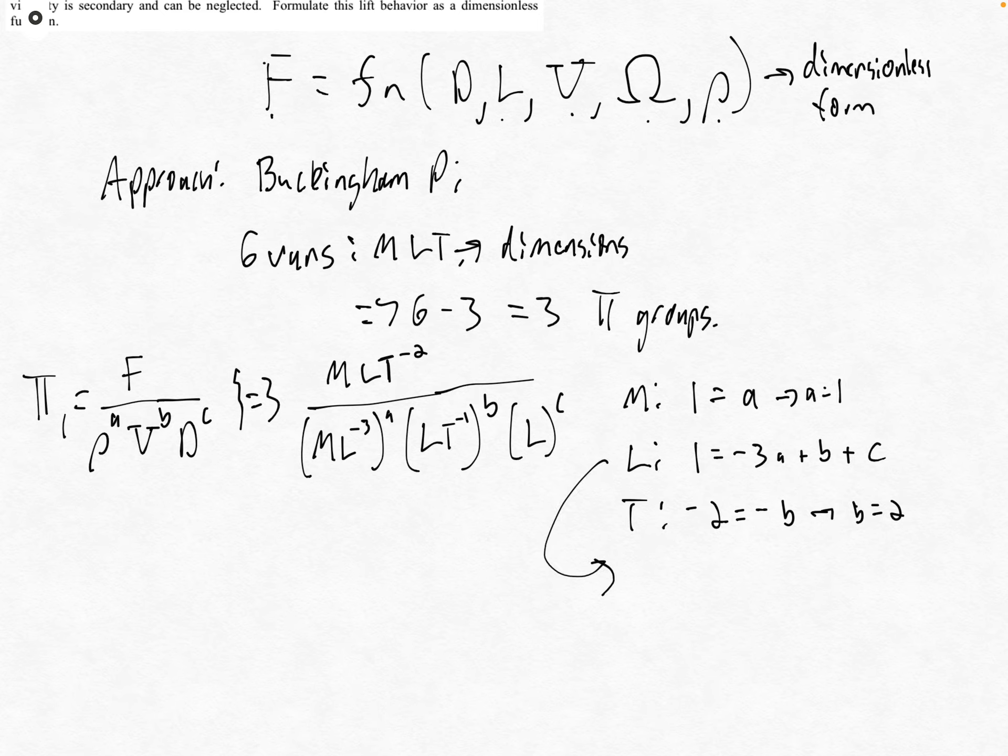We have a equals one already. Plugging that in, we get one equals minus three plus two plus c, so c equals two. Our first pi group is F over rho u squared d squared.